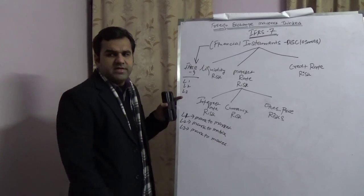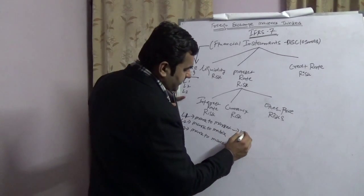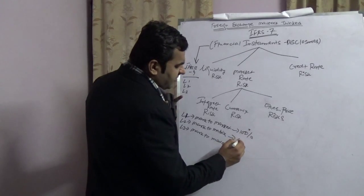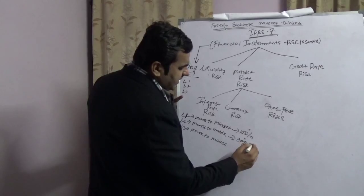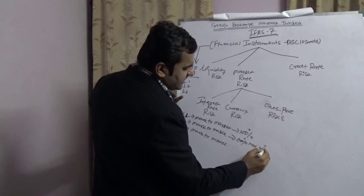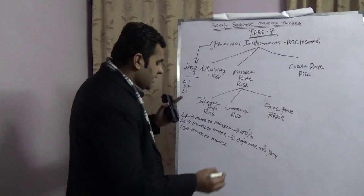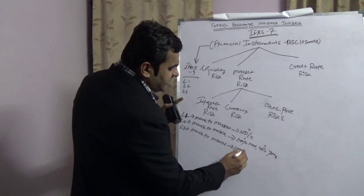L1 refers to the fact when 100% is market observable data. L2 refers to the fact that 60% market and 40% yours—your own assumptions, your own data, your own model. And L3 refers to the fact when 100% is yours.